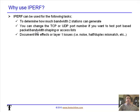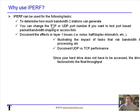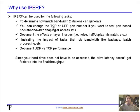We can document the effects of layer one issues like noise, half/full duplex mismatches, bad cabling, and all that. We can also illustrate the impact of tasks that rob bandwidth — maybe somebody's doing a backup, ghost re-imaging, or batch processing. We can also document UDP versus TCP performance.